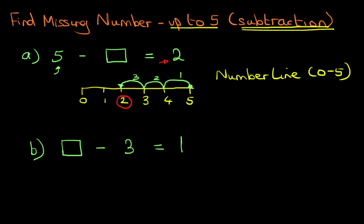3 jumps. 5 minus 3 equals 2. So if we're trying to find the missing number, which is over here, it's very simple to use the number line. Start at the number 5. Find out where number 2 is. Make the jumps. And we arrive at our answer. So that's very straightforward.